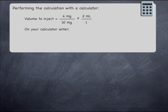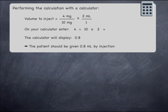To perform the calculation with a calculator, you simply need to enter 4, divided by 10, multiplied by 2, and then press equals. The calculator will display an answer of 0.8, meaning that 0.8 mils should be injected. This is in line with the earlier estimation of a volume of less than 1 mil.